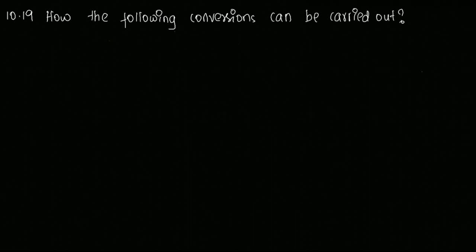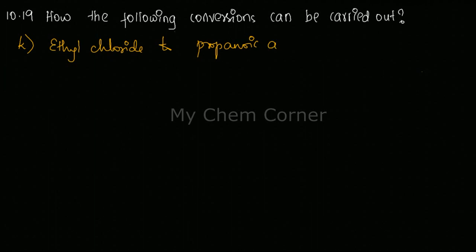The next question is number eleven, which is converting ethyl chloride to propanoic acid.